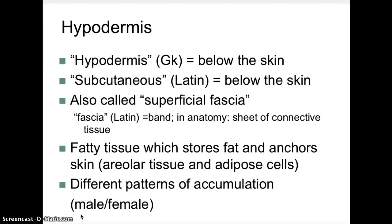Lecture two of the integumentary system. We looked at the epidermis, which is the outermost layer of the skin, also called the cutaneous membrane. Then we dove deeper into the dermal layer, which is thicker and composed of dense irregular connective tissue. The upper layer of the dermis has finger-like projections called the dermal papulae, which anchor the epidermis and cause the ridges seen as fingerprints. We did that fingerprint analysis in anatomy lab. Fingerprints are those spiral and concentric patterns that increase friction to provide better gripping of surfaces.